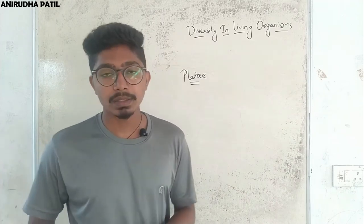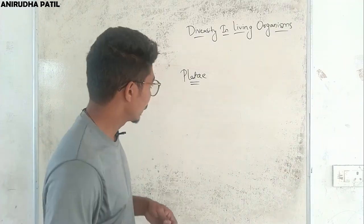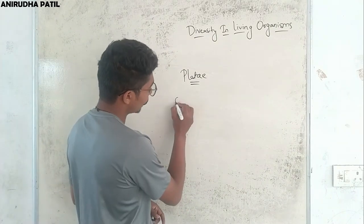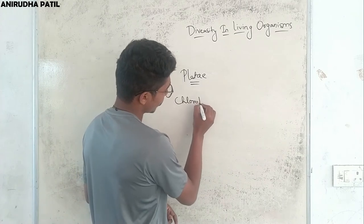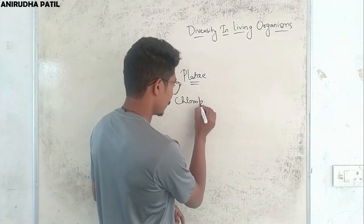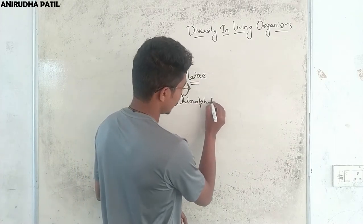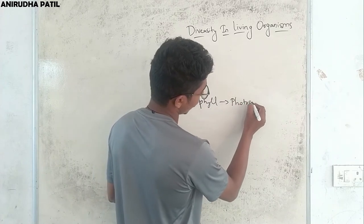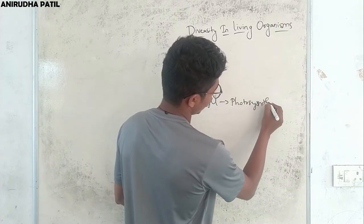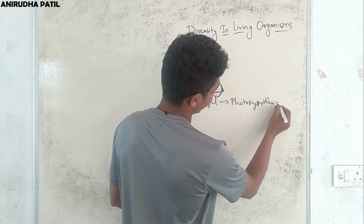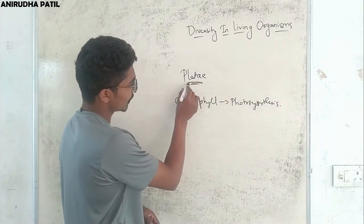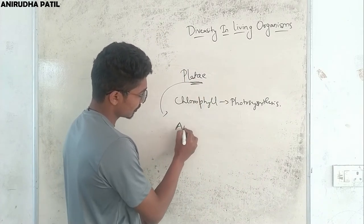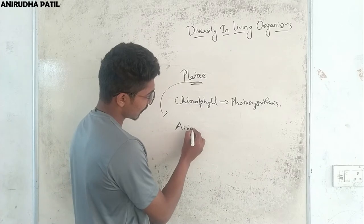Most plants are eukaryotic, multicellular, and autotrophic. They prepare their food with the help of chlorophyll through the process of photosynthesis using sunlight. We will see some of the other groups in detail in the next session.